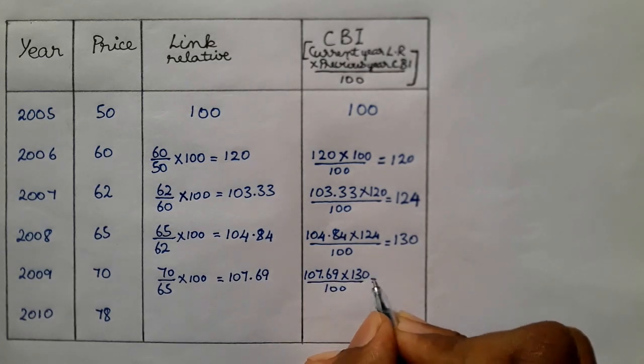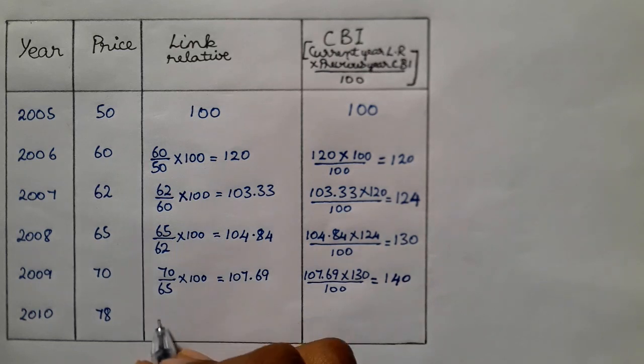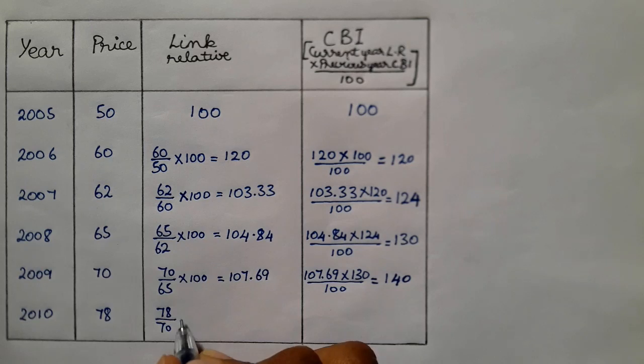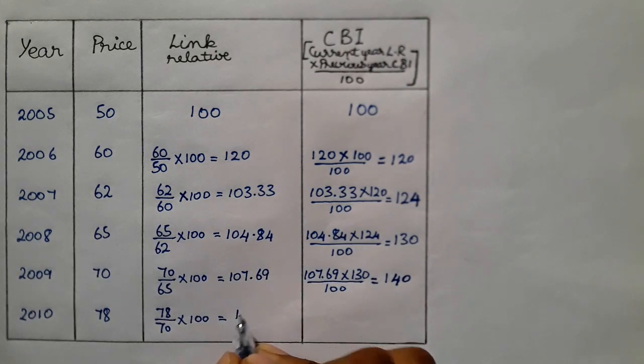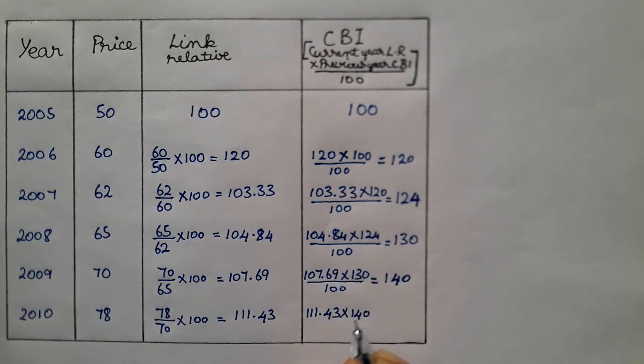And the final is 78 divided by 70 into 100. If we calculate this is 111.43. This is 111.43 into previous answer 140 divided by 100. If we solve this is 156.